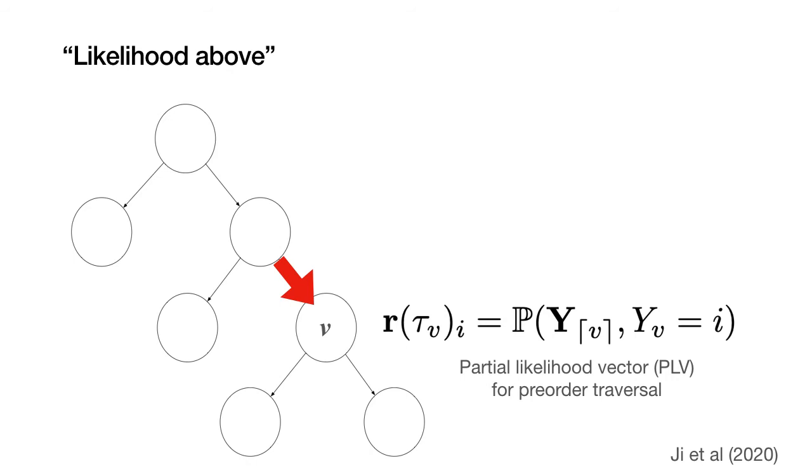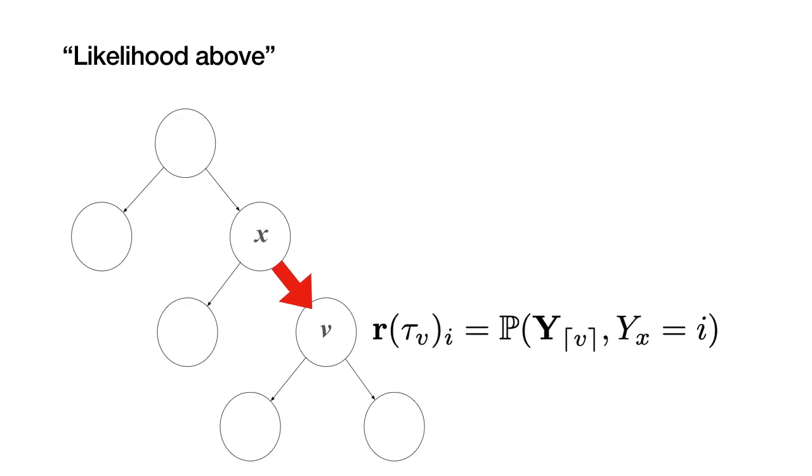Now I'm going to briefly describe the pre-order pass of the two-pass algorithm. So to that end, we need a notion of likelihood of the observed sequences above a node. And we again adopt the notation used in Ji et al. Recall that pre-order traversal ensures that a parent node is visited before its children. So we're going to associate a PLV, we call it RPLV, to each node of a tree. And we will compute them during a pre-order traversal. These pre-order PLVs store a joint probability of the observed sequences above V and the value of the sequence at node V.